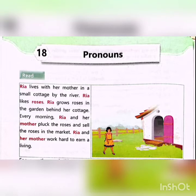Now, if you focus on the words: Ria, roses, Ria and her mother — these nouns are repeated throughout the passage.